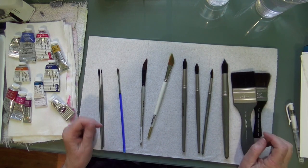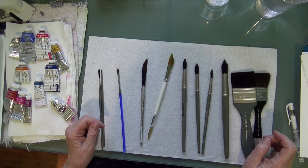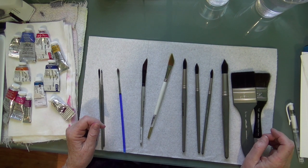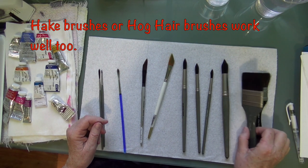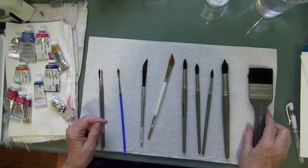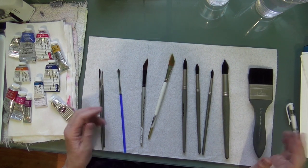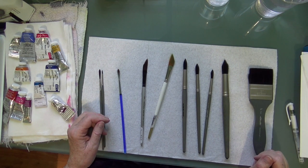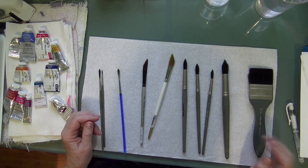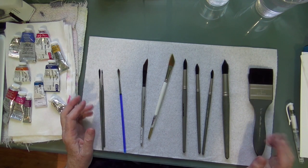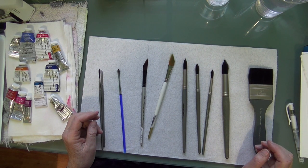You can also buy a Hake brush, H-A-K-E. It's natural, I think it's goat hairs and they're either Japanese or Chinese brushes and they're very inexpensive. Or you can also get a hog hair brush, just one of those cheap hog hair brushes from the hardware store, one and a half inch or two inches even depending on how big you paint. That'll also hold a lot of water for you.